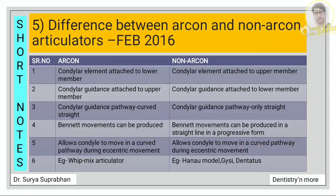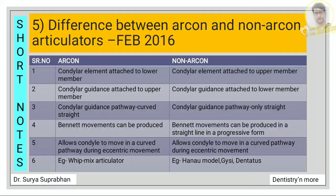In non-arcon articulators, it is the opposite: the condylar element is attached to the upper member, condylar guidance is attached to the lower member, the condylar guidance pathway is only straight, and Bennett movements can be produced only in a straight line in a progressive manner. The condyle moves in a curved plane during eccentric movement. Examples include the Hanau model, Gysi, and Dentatus. The fifth point is the same for both arcon and non-arcon.